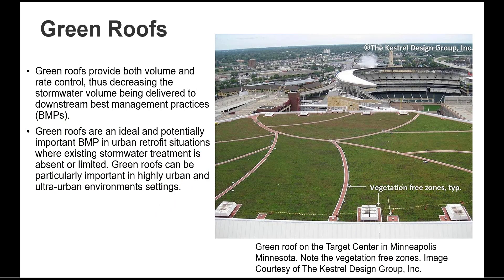The next stormwater control measure is green roofs. Green roofs typically occur at the beginning of the stormwater treatment process — we also call it the stormwater treatment train — starting from the source and ending at the receiving body of water. Green roofs provide filtering of suspended solids and pollutants associated with suspended solids, although total suspended solid (TSS) concentrations from traditional green roofs are generally low. The photo shown here is of a green roof on top of the Target Center in Minneapolis, Minnesota.